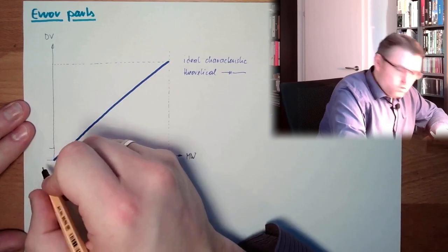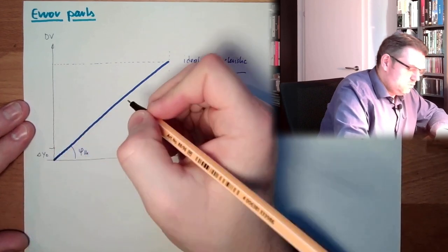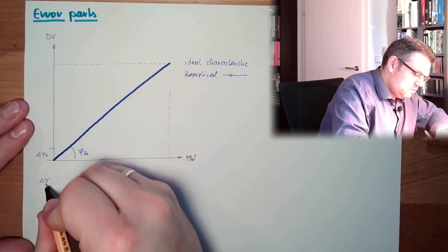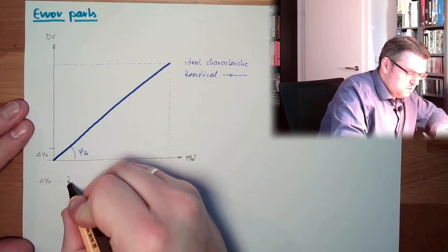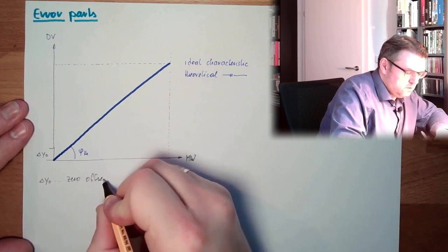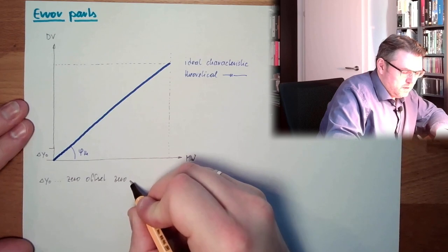So that's our delta y zero. Delta y zero. Zero offset, zero error.